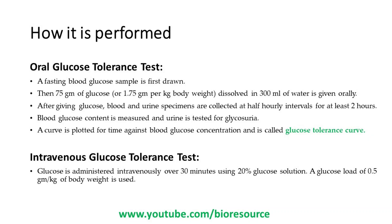For oral glucose tolerance test, 75 grams of glucose dissolved in 300 ml of water is given orally, and every 30 minutes the sample is collected and glucose values are calculated, monitoring the blood glucose levels.